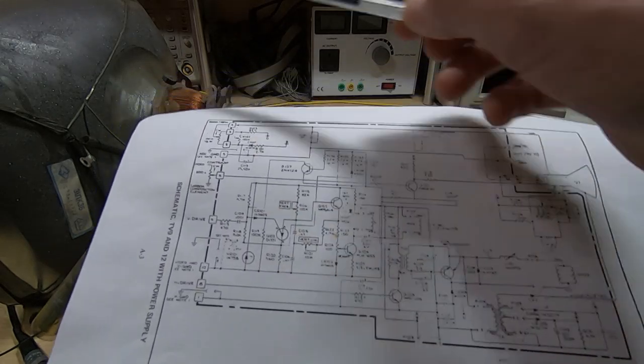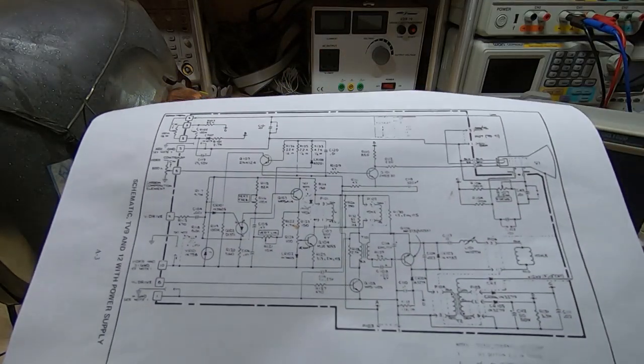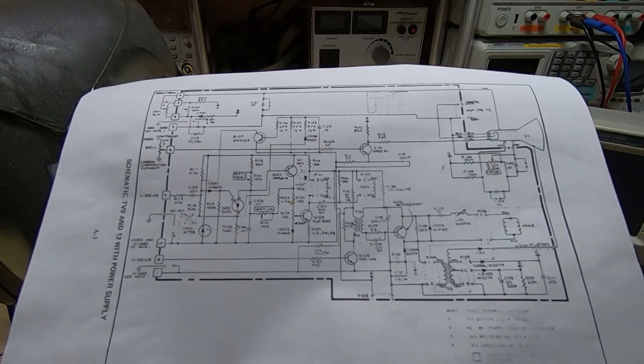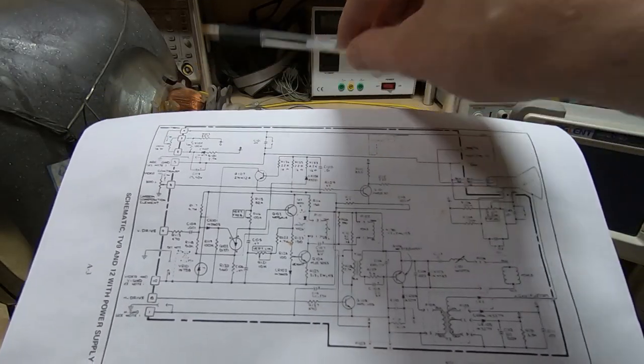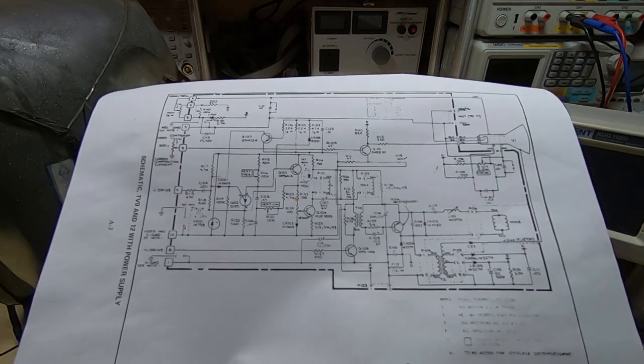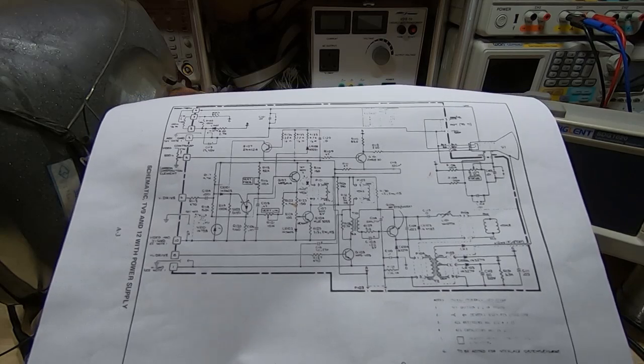When you're trying to drive this, because it is of course a current driven system, it's not a voltage driven system, it's magnetic deflection. So you need to give it a fairly weird looking current drive in order to get a linear trace on the display.